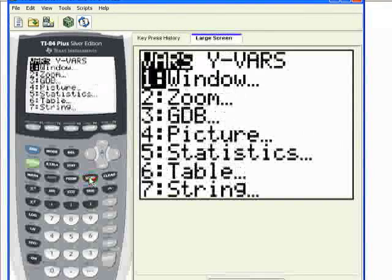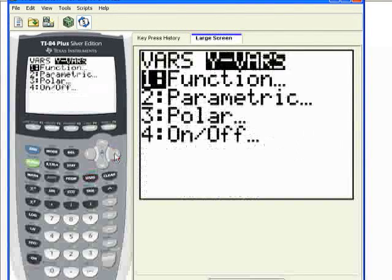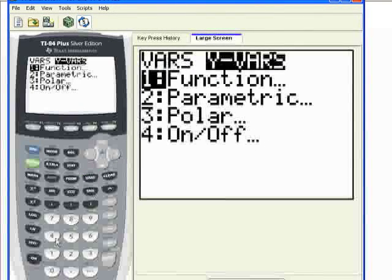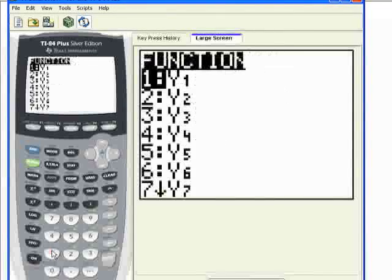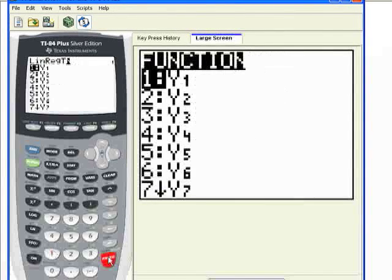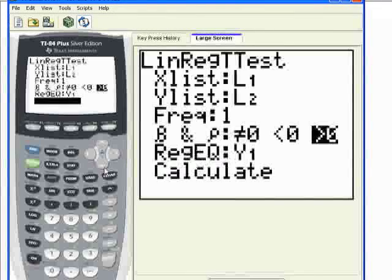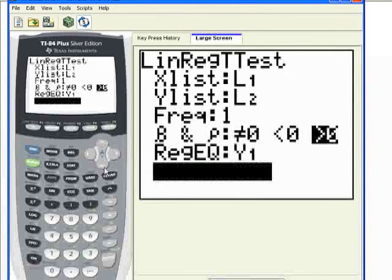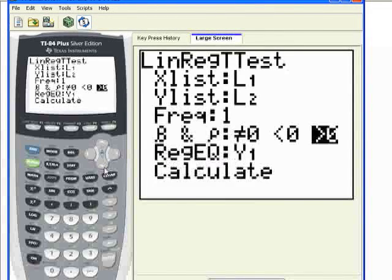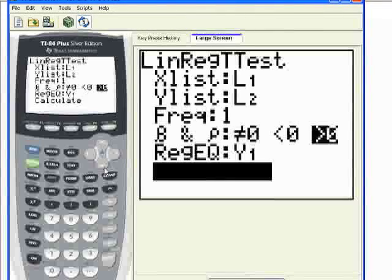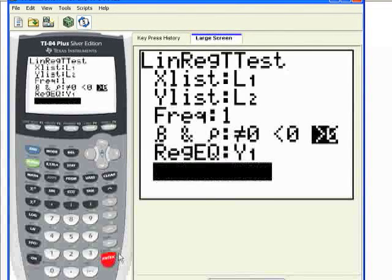I will put the regression equation in Y1. We go to vars, move over to Yvars, select option 1 which is function, and then Y1 is the first selection. What it's going to do is calculate the regression line and store the results in Y1 for you. So if you do a scatterplot again, you hit graph, your scatterplot will show up and the regression line will also show up. So I'm going to select calculate.